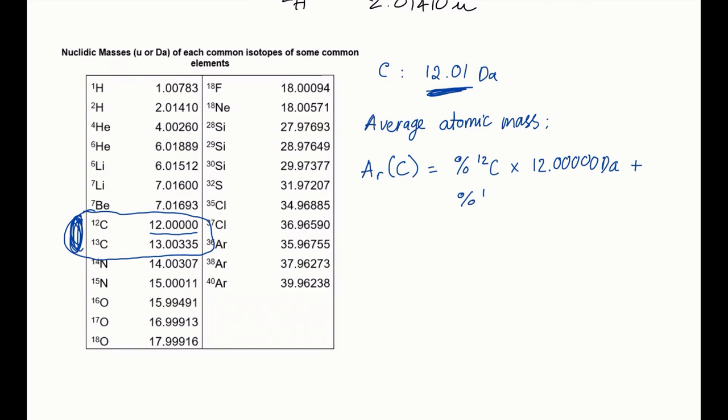So in this case, carbon-12, you multiply by the nuclidic mass of carbon-12, which is 12 Dalton. That plus the percentage for the natural abundance of the second isotope, multiplied by the nuclidic mass of the second isotope. Now if you have more, you're just going to keep going.